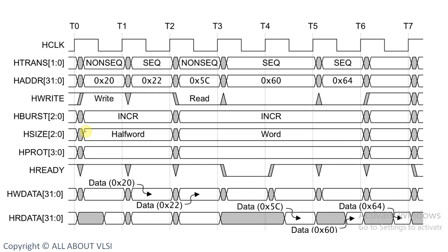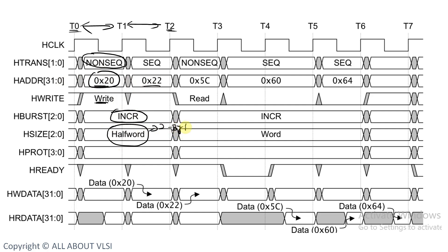In the example, from T0 to T1 cycle HTRANS is non-sequential, meaning it is the first data in the transfer. The address is 0x20, HWRITE is 1 indicating a write operation, the burst is INCR (undefined length), and the size is half-word — 2 bytes. From T0 to T2 the size and burst type remain the same, so the first address is 0x20 and the next is 0x22 because the size is 2 bytes.